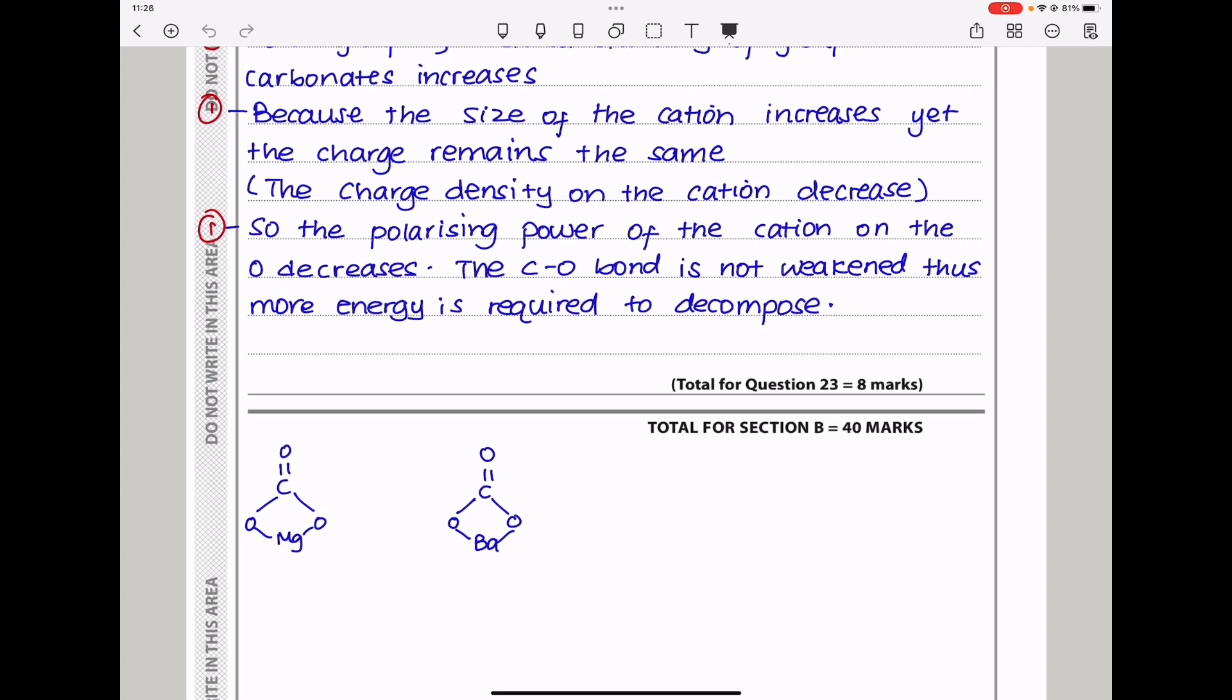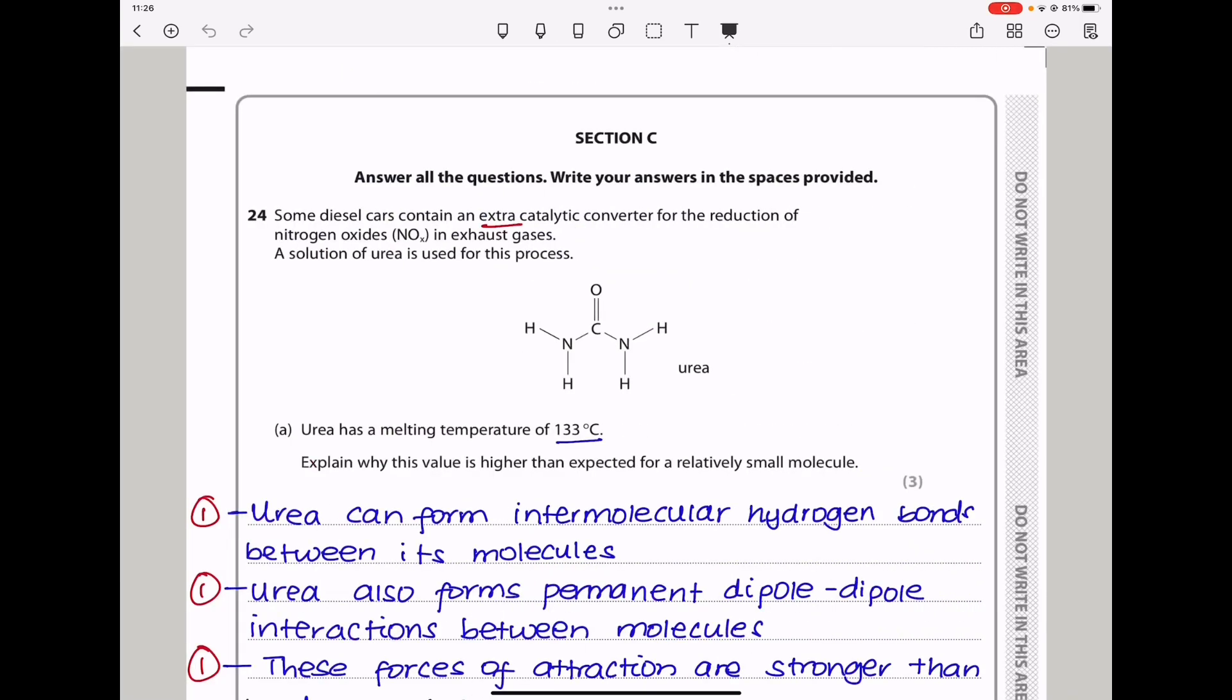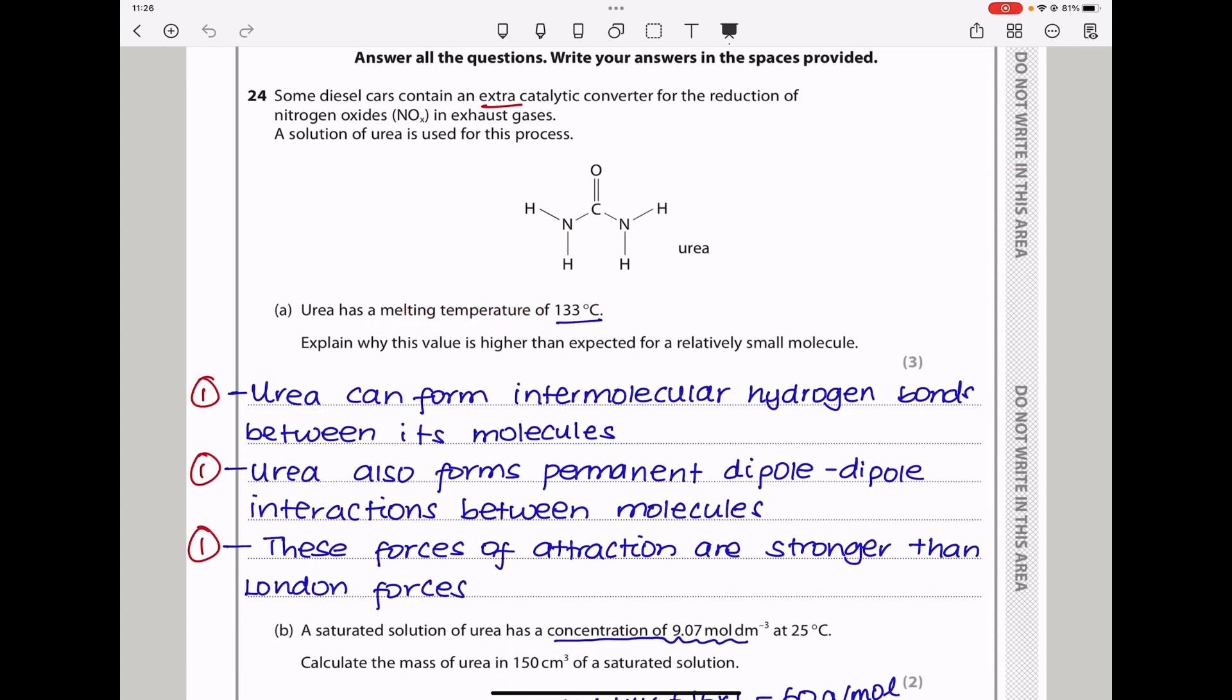So more energy will have to be supplied to break that bond in order to decompose barium carbonate in comparison to magnesium carbonate. So this brings us to the end of question 23. Let's continue to question 24. Question 24. Some diesels contain a catalytic converter for the reduction of nitrogen oxides in exhaust gases. A solution of urea is used for this process. So this is the structure of urea. And they say urea has a melting temperature of that. Explain why this value is higher than expected for a relatively small molecule.